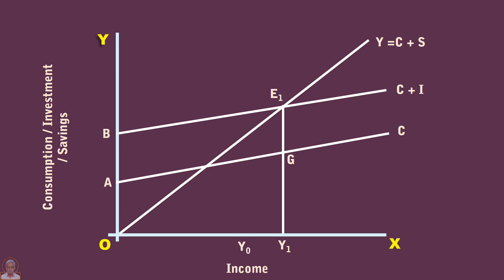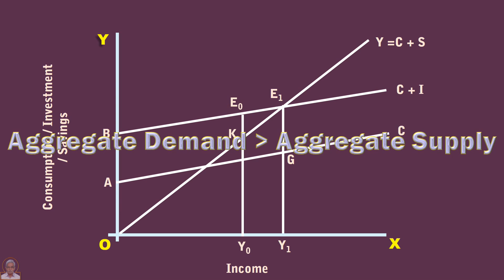Consider income Y0. It is less than the equilibrium income Y1. The economy cannot be in equilibrium for these reasons. One: the aggregate demand Y0E0 is greater than the aggregate supply Y0K. Aggregate demand is greater than aggregate supply.